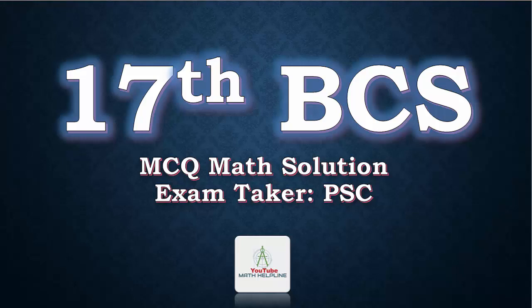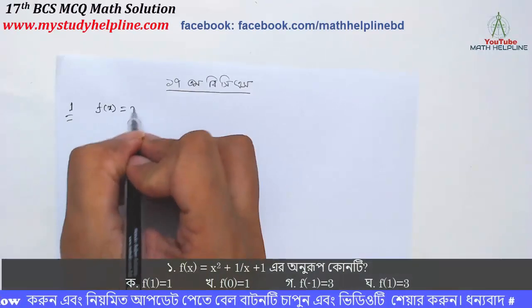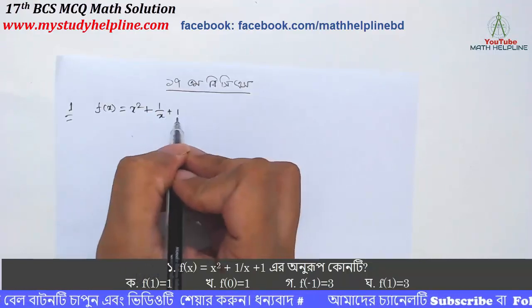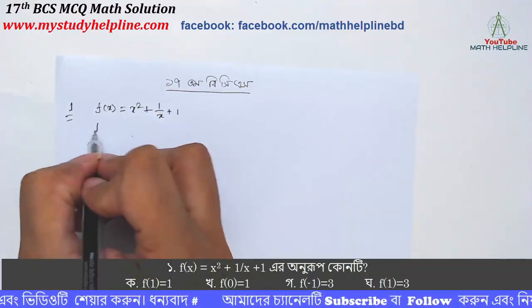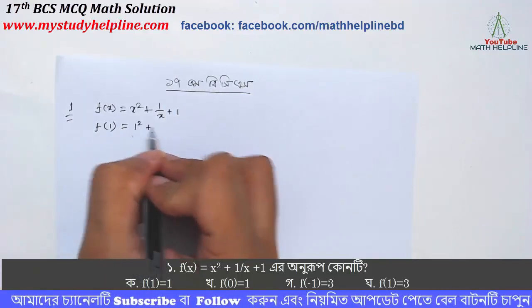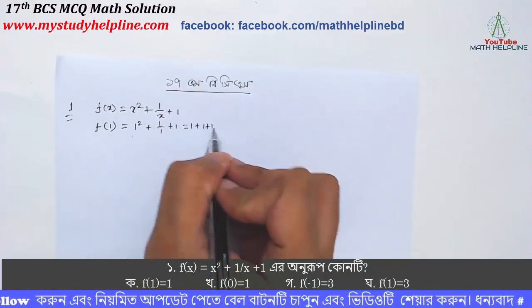સ્વાગત. function of x equal to x square plus 1 by x plus 1. એ ઉણોરોપ. option જોઈએ. f(1) = 1 square plus 1, by 1 plus 1, equal to 1 plus 1, by 1 plus 1, equal to 2 by 2 = 1 plus 1 plus 1 equal to 3.